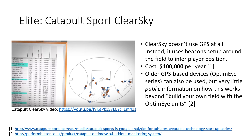Moving on to the elite space, we have Catapult Sports ClearSky. ClearSky doesn't actually use GPS at all. Instead they have beacons set up around the field in known locations which are used to infer the player position, and as you can see from the screenshot on the left, it does quite a good job of that. They've managed to match it up with the map of the field to infer exactly where the players are and which zones they're in.